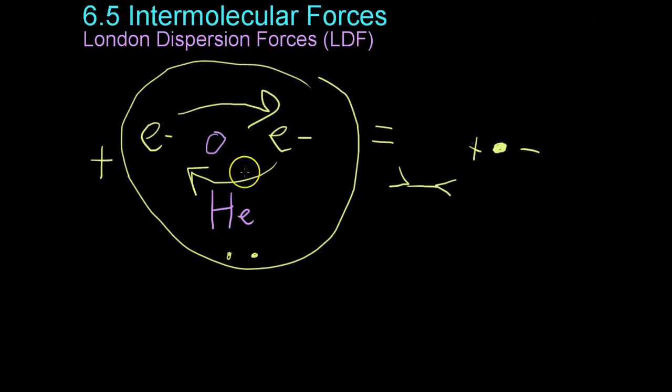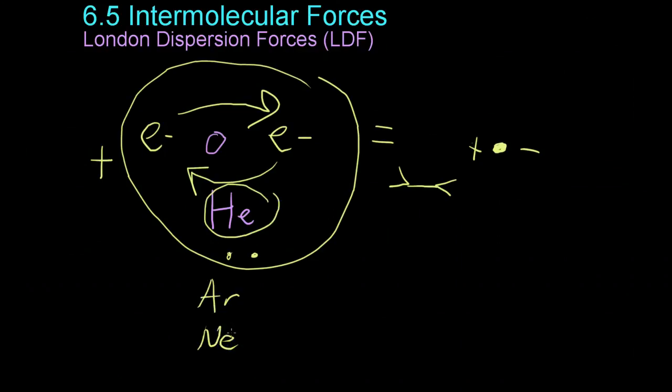And this means that things that rely on London dispersion forces to hold themselves together as liquids such as the noble gases like helium, argon, neon, etc. have very low boiling points because there's not much attractive force between them at all only due to this small London dispersion force.